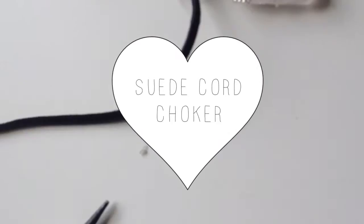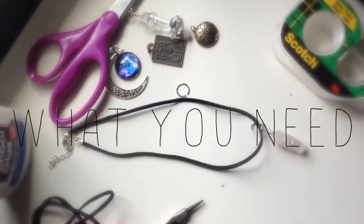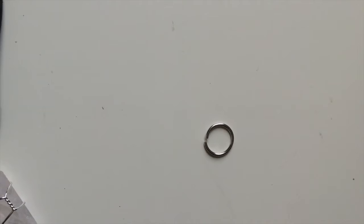Now we're gonna move on to the suede choker necklace and some things that you're gonna need are suede cord, scissors, jewelry pliers, lobster clips, and a jewelry loop as well as charms of your choice.